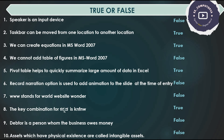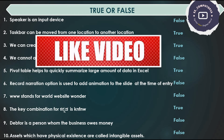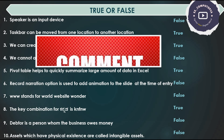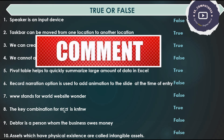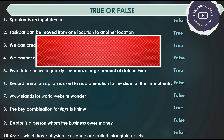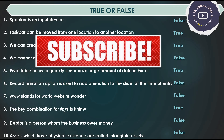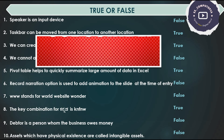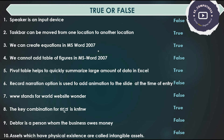Table of figures option exists in Word — so that's False (cannot is false, meaning we can). Pivot table summarize — True. Record narration uses animation — False, record narration and animation are different. WWW stands for World Wide Web — False as stated, so the answer is false.